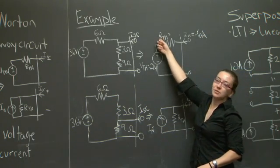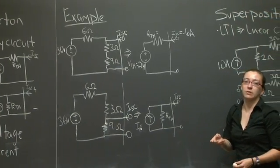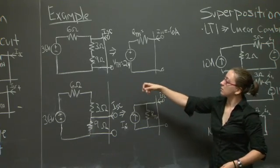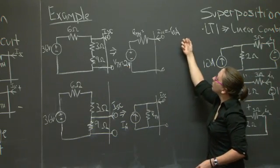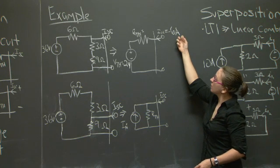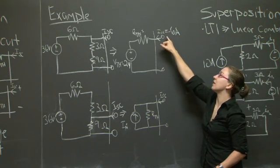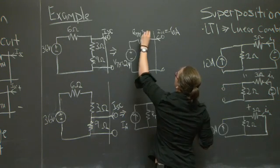That just leaves our Rth. Once again, we're going to rely on Ohm's law. If we divide our voltage by our current, you can't have a negative resistance. We're actually going to divide by the negative of this. We'll get out 4 ohms.